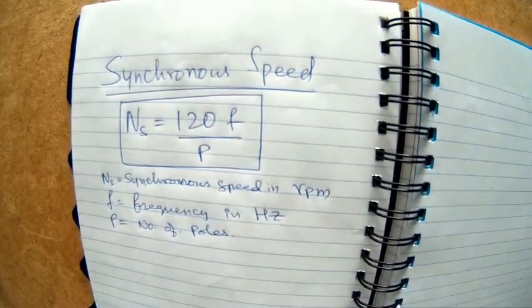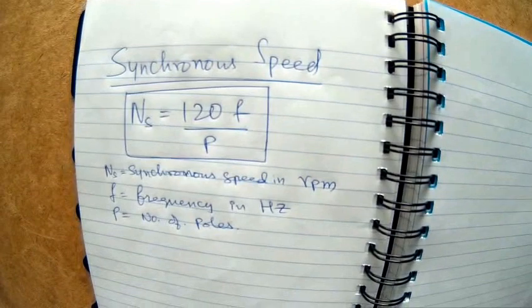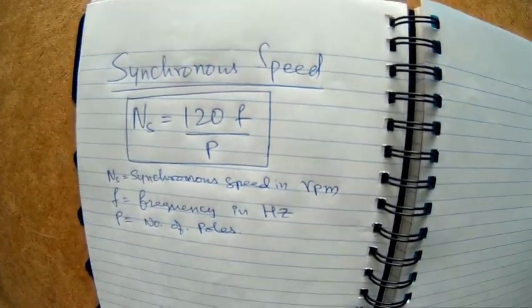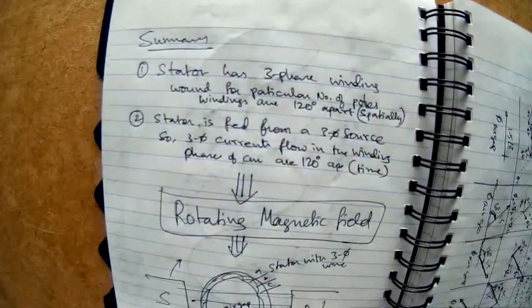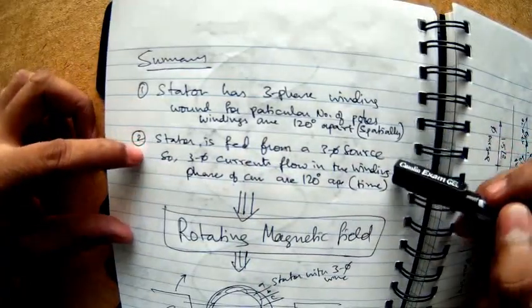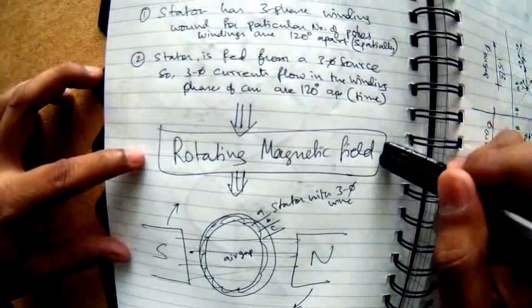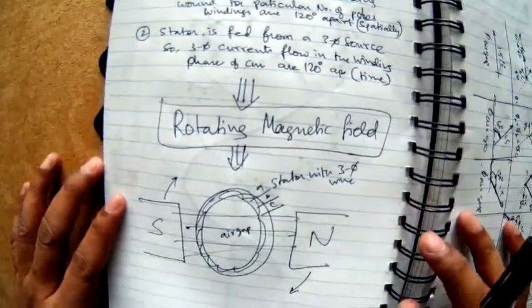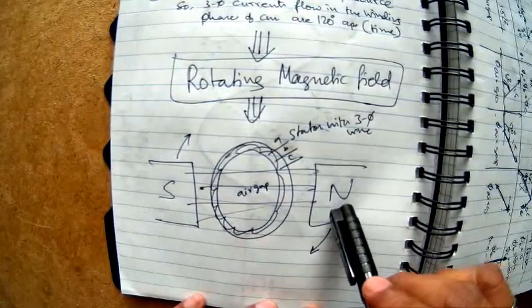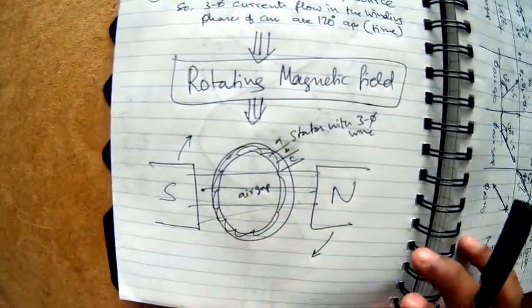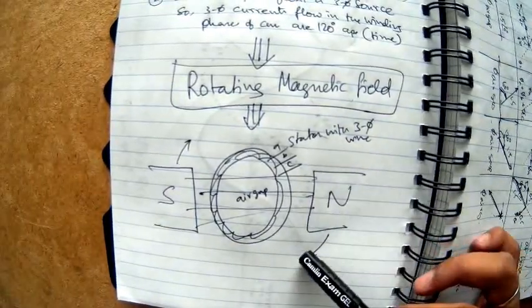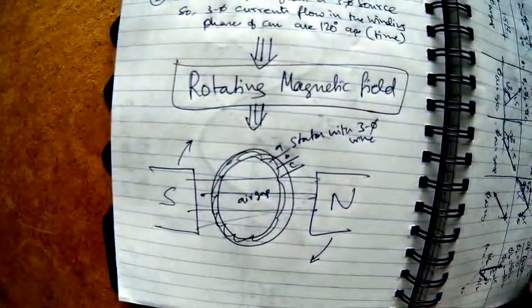Hello again. In this video, I'm going to talk about what is synchronous speed. This is the speed of the rotating magnetic field that is being set up in the stator. If you recall the previous video, we had seen that a stator having three-phase winding which is fed from a three-phase source will create a rotating magnetic field. It is as if there is some kind of large imaginary North Pole and South Pole, and the North Pole is rotating this way and the South Pole is rotating this way.